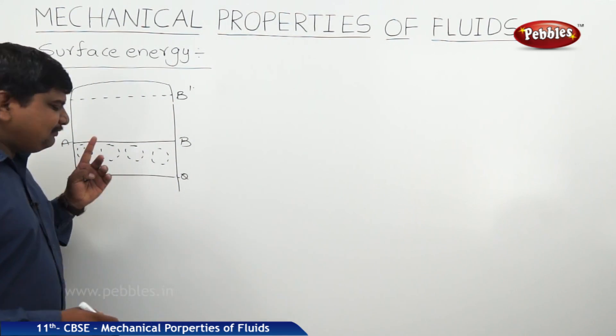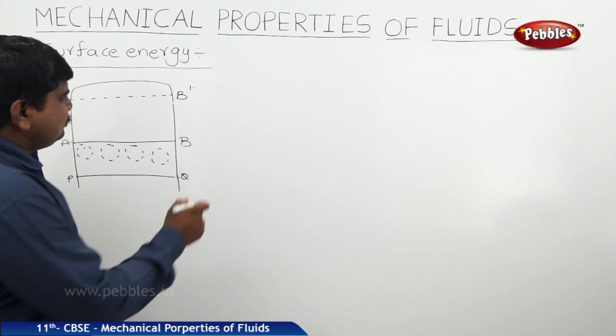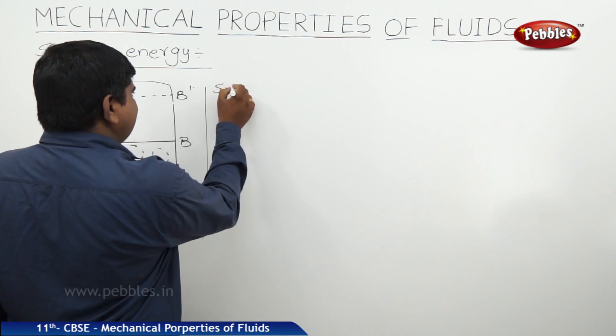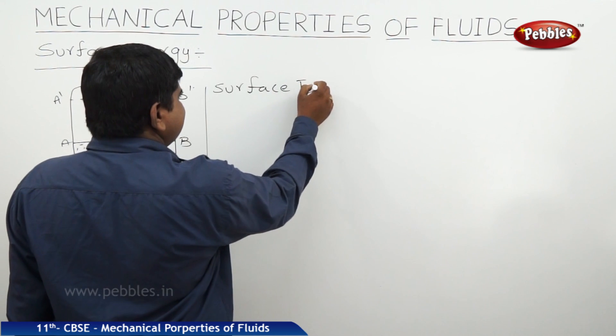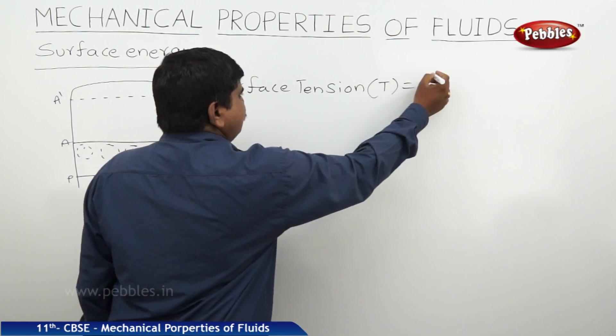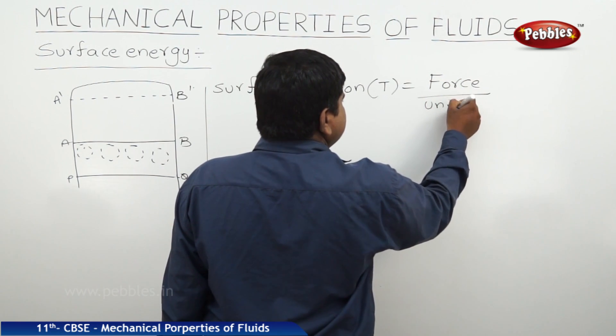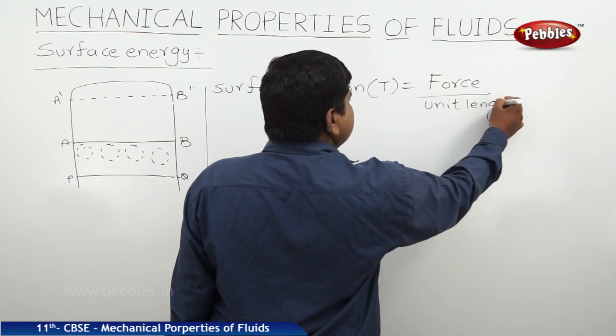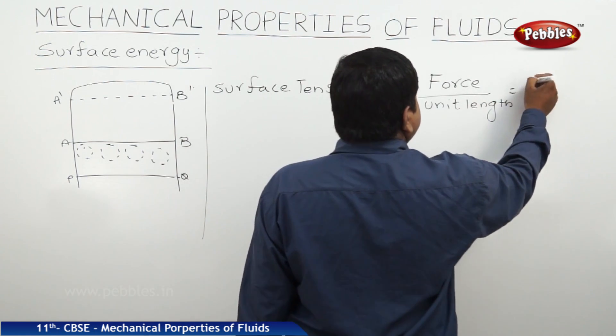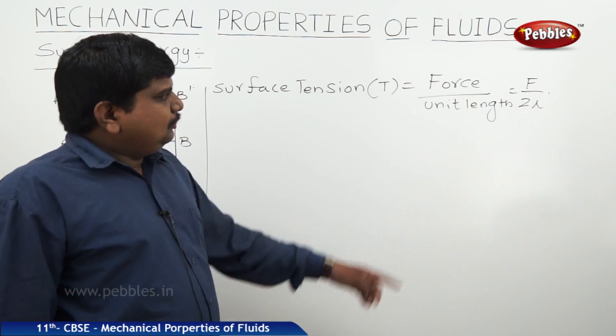Next, we know that there is a force which is required to increase the surface area. So according to the surface tension formula, surface tension T is equal to force per unit length. It is nothing but F by 2L.